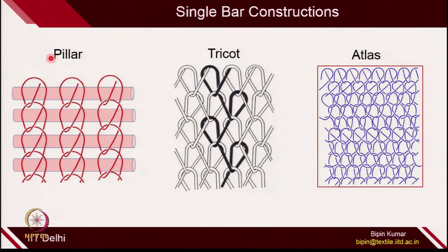Just a quick recap of single guide bar structure. In the last class, we talked about 3 categories of single bar construction where a single guide bar was used. First was pillar, where there was no connection between the wales. Pillar fabric is usually created with the help of weft inlays, or sometimes pillars are used in double bar constructions to give support.